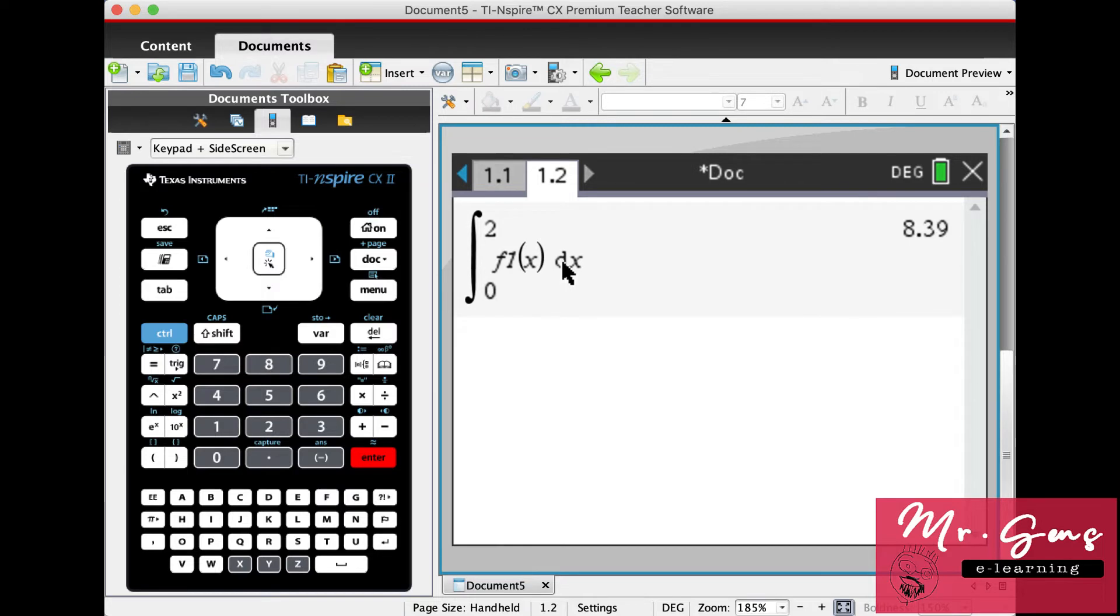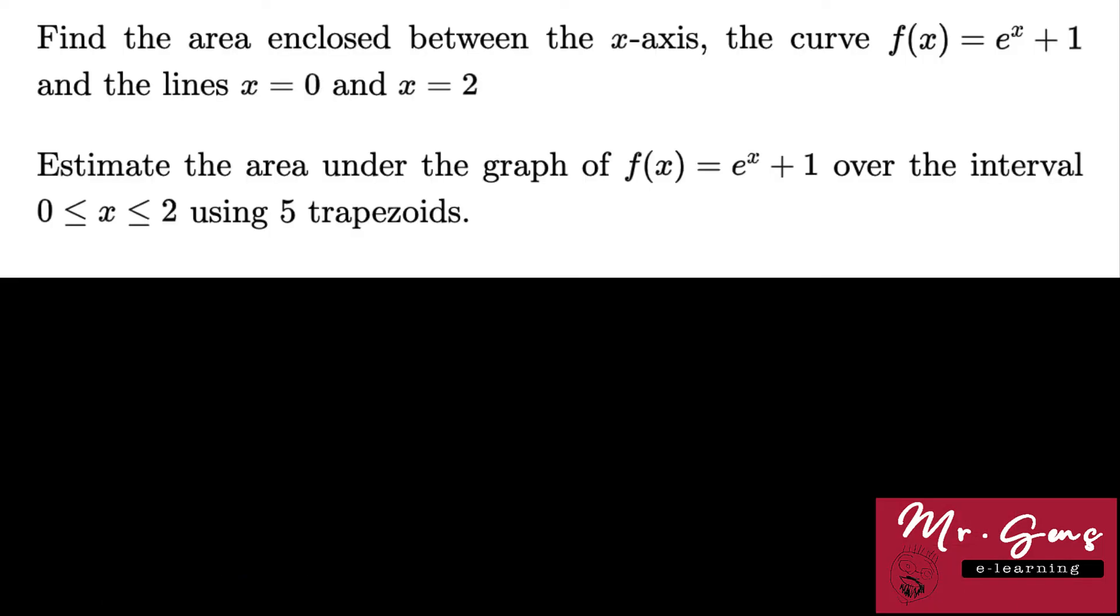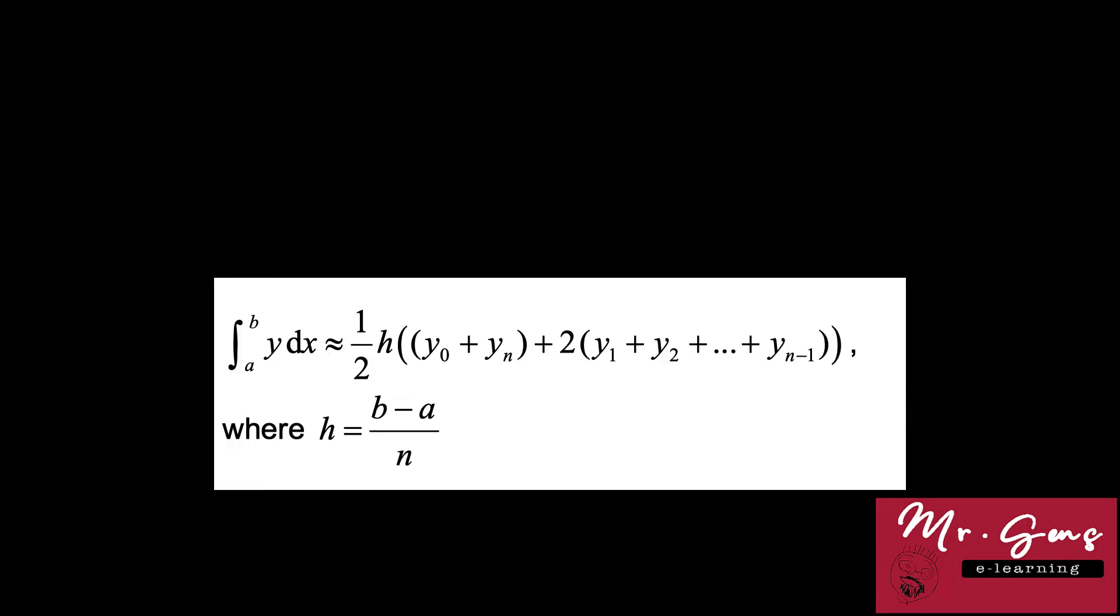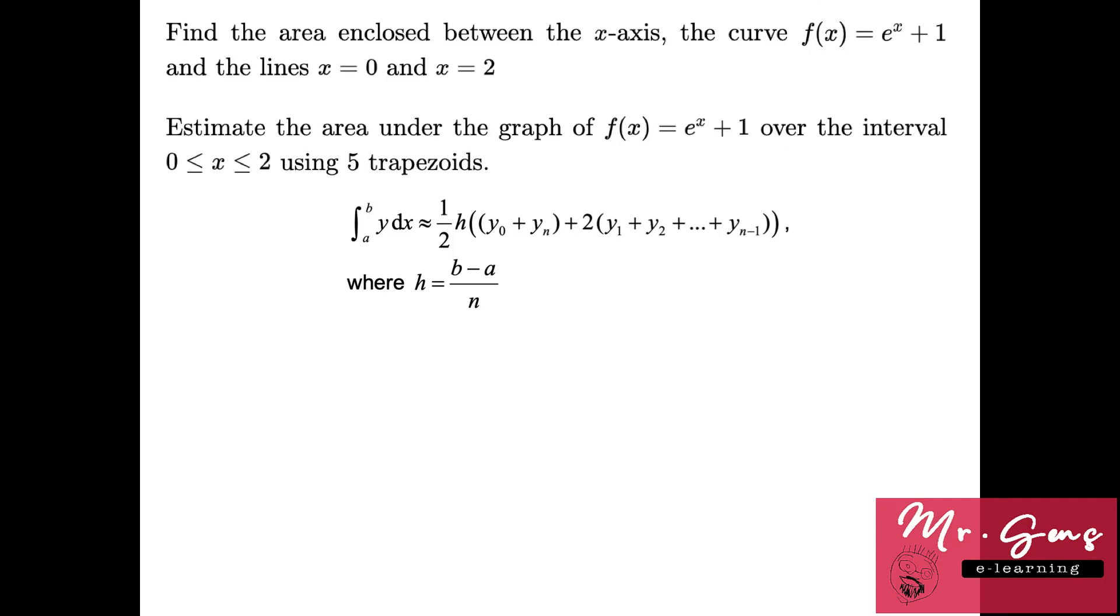The second part is especially for application students. Let's remember the formula from the formula booklet. Lower value on the question is 0, that is a, and b is 2. So height of the trapezoid will be 2 minus 0 divided by 5, which is 0.4.